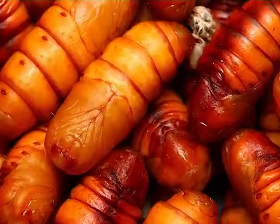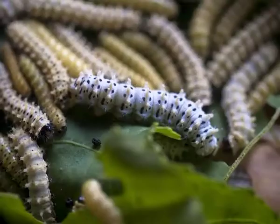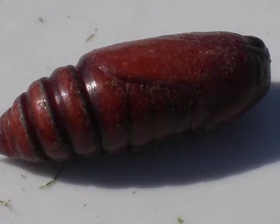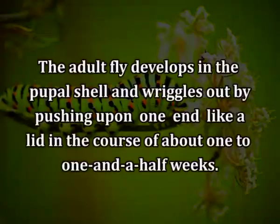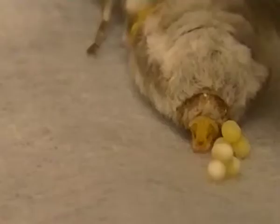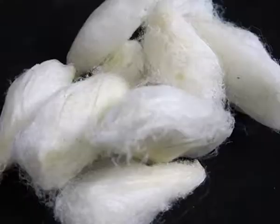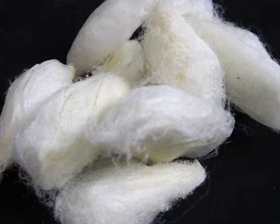The maggot grows to full size within about a week. By that time, the eri worm generally forms its cocoon and turns into a pupa. The full-grown fly maggot makes its way out of the cocoon through the pupa, drops on the floor, and gets into the soil, where it contracts the body and turns into a dark brown seed-like pupa. The adult fly develops in the pupal shell and emerges by pushing open one end like a lid in the course of about one to one and a half weeks. Each fly is capable of laying about 300 eggs and attacking the same number of mature eri worms. However, this fly pest cannot do much damage to the eri industry as the eri cocoons are not reeled.